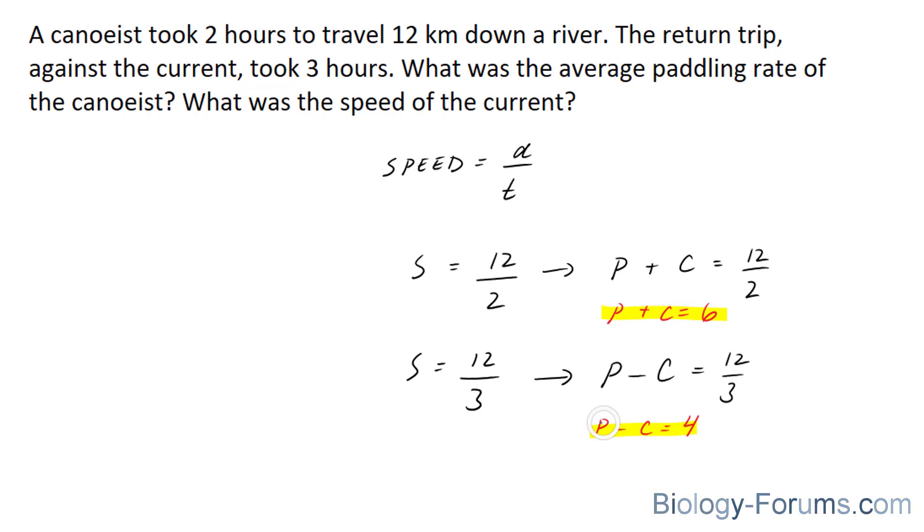And by solving for P, we find out his average paddling rate. And by solving for C, we find out the speed of the current.